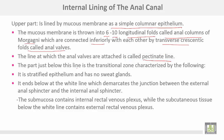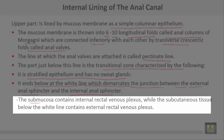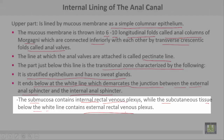The part just below the pectinate line is the transitional zone, characterized by stratified epithelium with no sweat glands. It ends below a white line which demarcates the junction between the external anal sphincter and internal anal sphincter. The submucosa contains the internal rectal venous plexus, while the subcutaneous tissue below the white line contains the external rectal venous plexus.